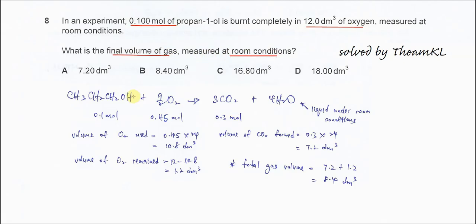Okay, so first, we need to know the equations of this combustion. Because the propane-1-O is an organic compound with just CHO, after it's burned, it will form CO2 and H2O only. And under room conditions, the H2O is liquid. So it's not going to involve in the total final volume of gas.